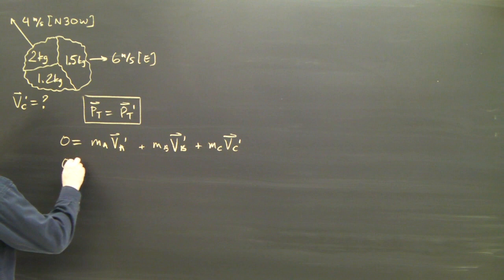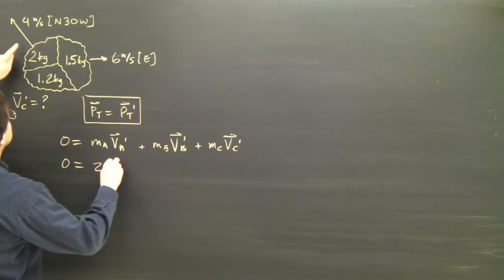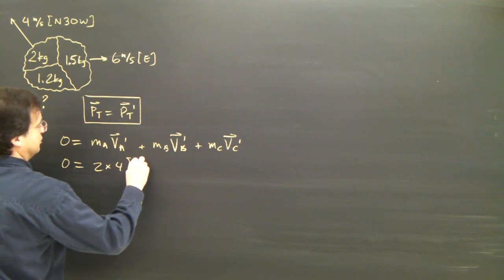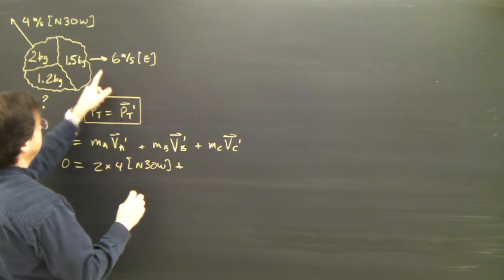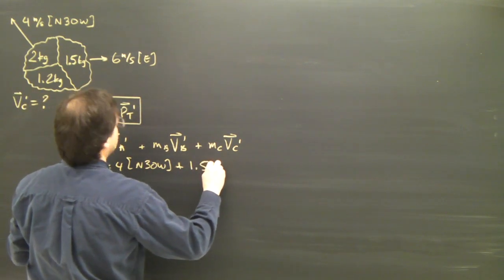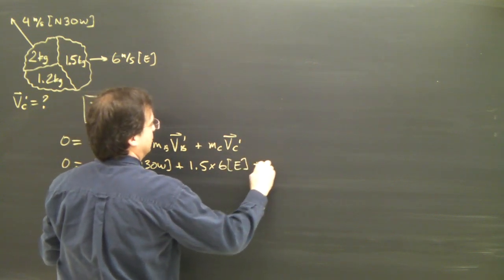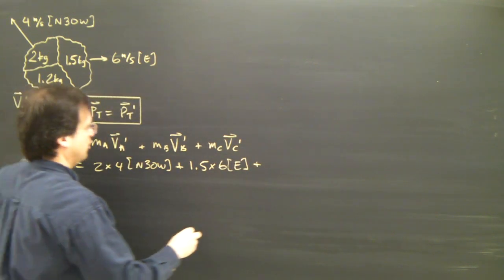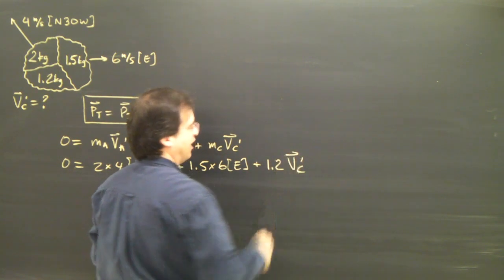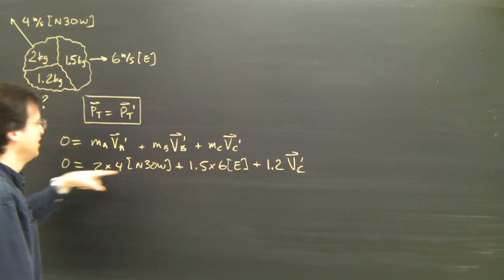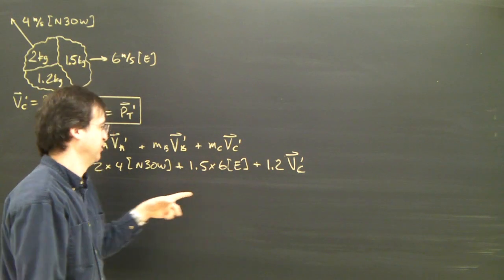So I put in the numbers. The momentum of a — let's call this piece a — is going to be 2 times 4 north 30 west. Plus the momentum of b — this is b — 1.5 times 6 east. Plus part c is 1.2 kilograms times the velocity of c afterwards. So there's my unknown. At this point it's just a vector equation. We know how to add and subtract vectors, so that's all we're going to do.